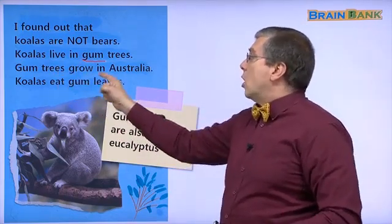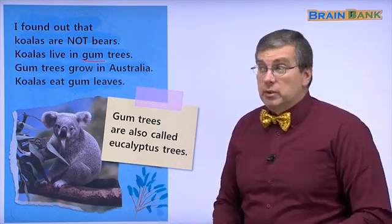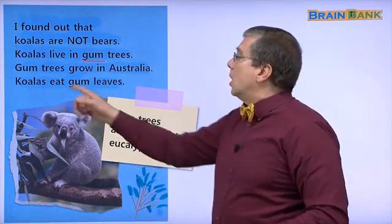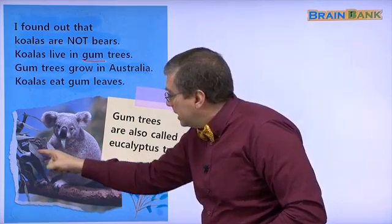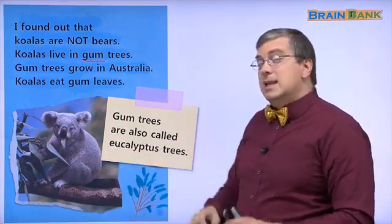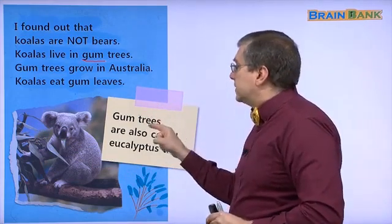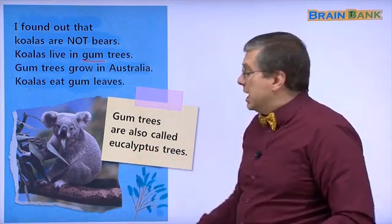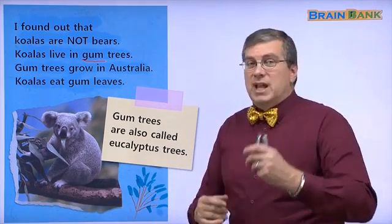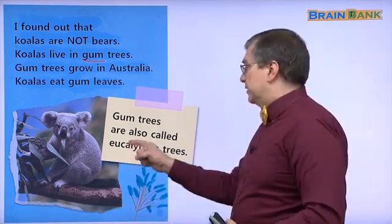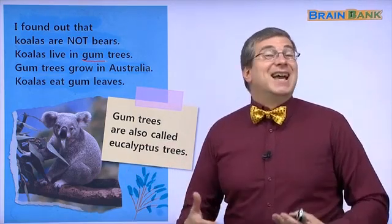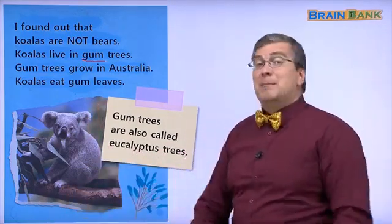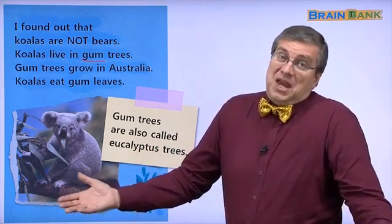Gum trees grow in Australia. That's why the Europeans were surprised by this tree and they called them gum trees. Koalas eat gum leaves. Here are the leaves from the gum tree. Now, do you know that the gum trees are also called eucalyptus? That's a big word. Eucalyptus. Eucalyptus trees. That's the scientific name for the trees. But eucalyptus, that's a harder word. Many people just say gum tree. It's the same thing.